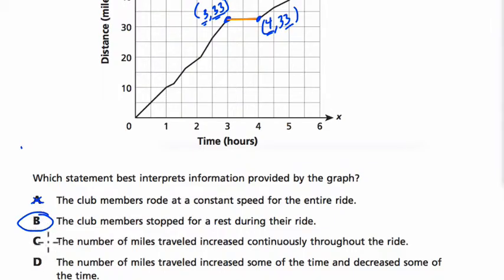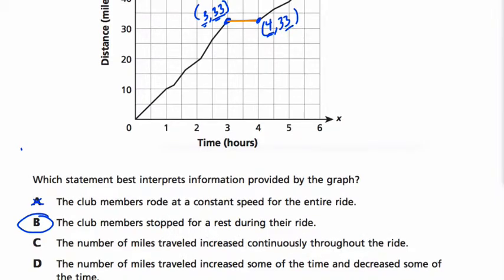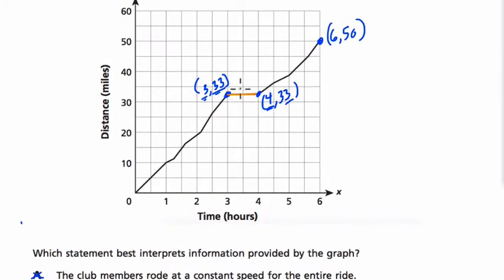And if we read the other choices, we'll see that those are also unreasonable. In C, they say the number of miles traveled increased continuously throughout the ride. That's not reasonable because in this part there is no increase.